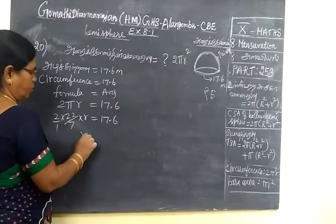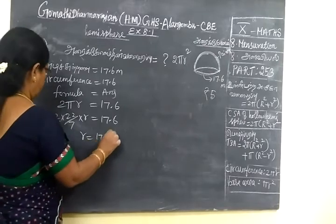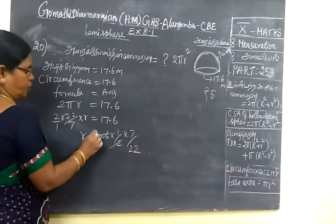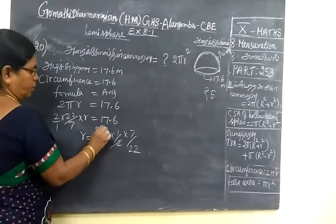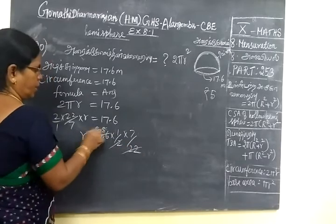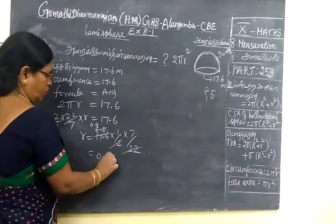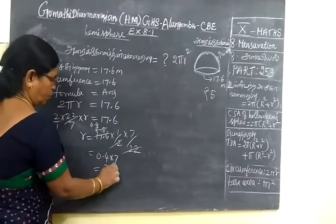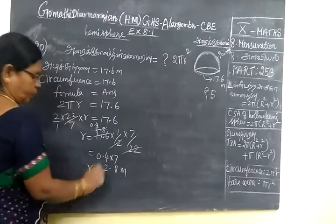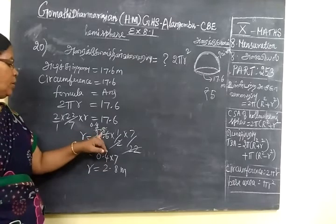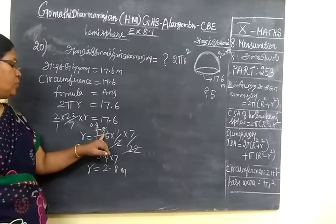If the circumference is equal to 17.6, we have to find R. The formula is 17.6 into 1 by 2 into 7 by 22. This gives us 0.4 into 7, which equals 2.8 meters. So R is 2.8 meters.